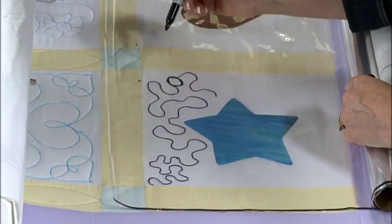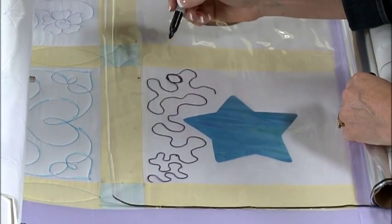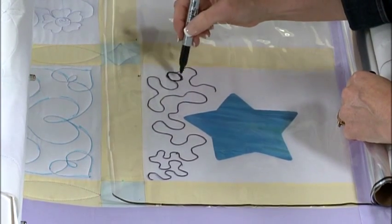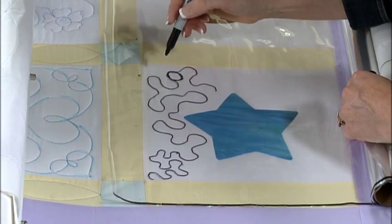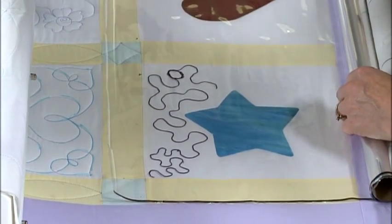And when I'm gauging the size of a stipple, I try to think of a familiar circle. To me right there, that's about the size of a nickel, and so that would guide me as I stipple.